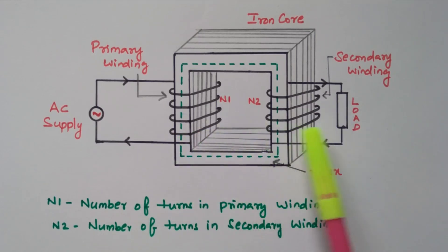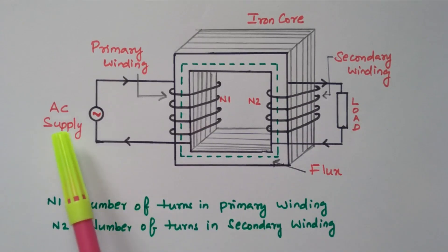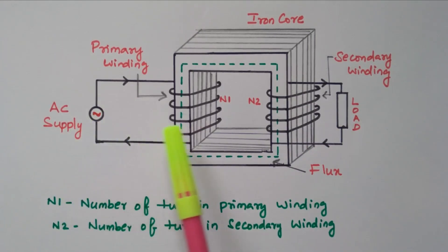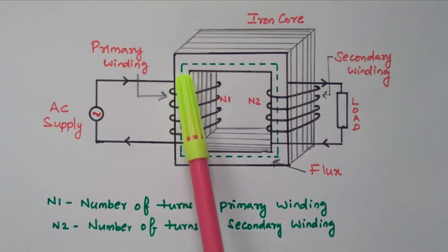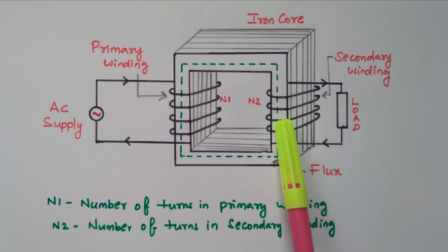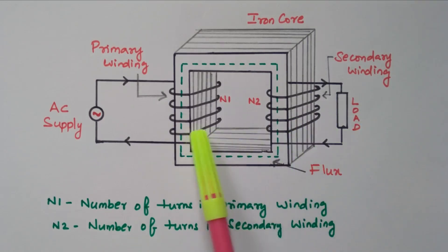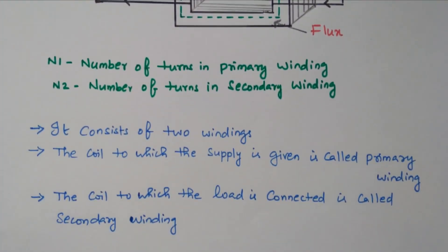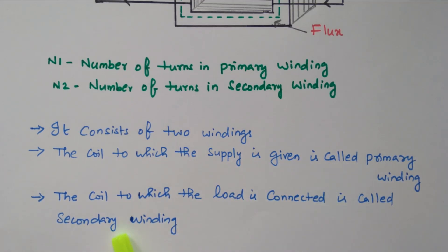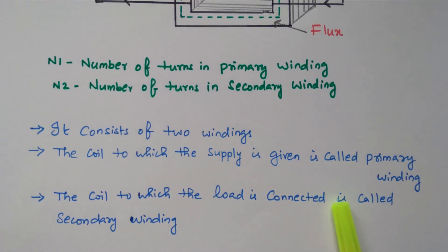There is a mutually induced EMF in the secondary winding. The transformer consists of two windings: the coil to which supply is given is the primary winding, and the coil to which the load is connected is called the secondary winding. There is mutual inductance between the primary winding and the secondary winding.